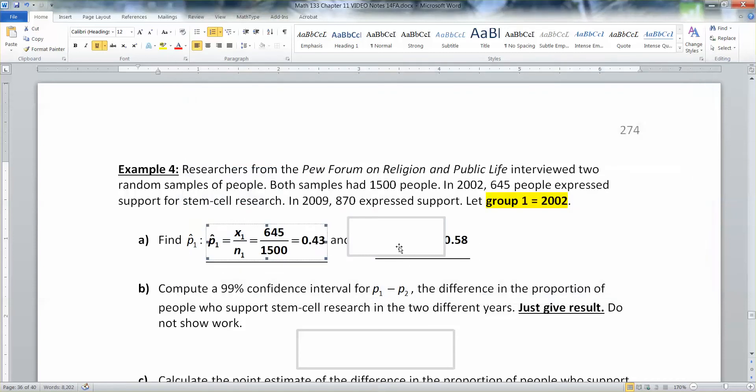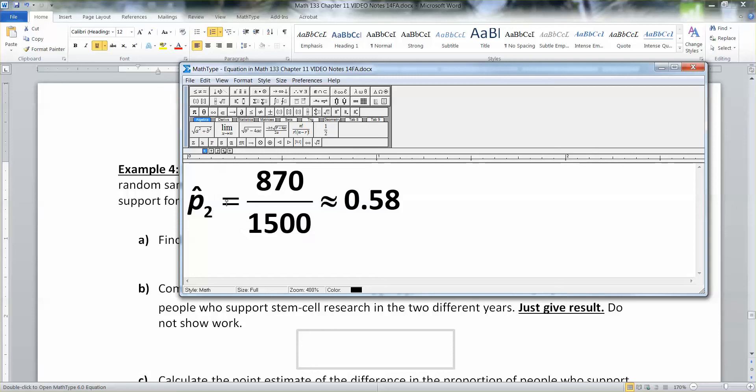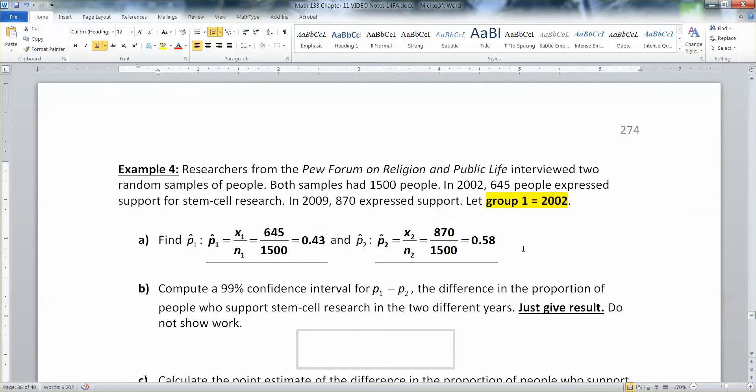And while I'm on the subject, 870 divided by 1,500 is 0.58. So I have x1, I better put this in. This is x1 over n1. And that's 645 over 1,500. Then for p2 hat, that would be x2 over n2, which is 870 over 1,500, which is equal to 0.58.